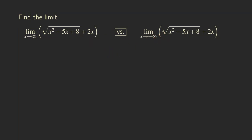Since these are two limits at infinity problems, what we are going to do is factor out the highest powers. For this expression, we want to first take out the x squared because that's the highest power inside the square root. You may ask about the 2x — we're not going to worry about that at this point, just wait until later. So first we're going to factor out the x squared.